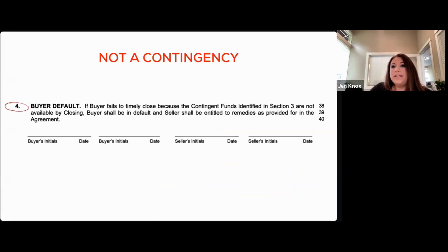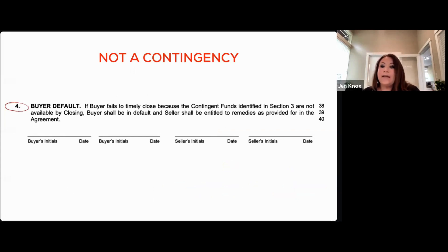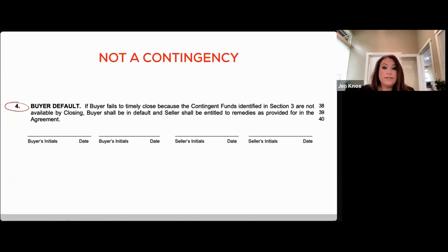The 22EF will not hurt a seller in any way, nor will it protect a buyer, because this form is a communication form to accurately disclose where all the money is coming from in the sale. If the buyer has no contingency protections and fails to close, they will lose their earnest money to the seller.